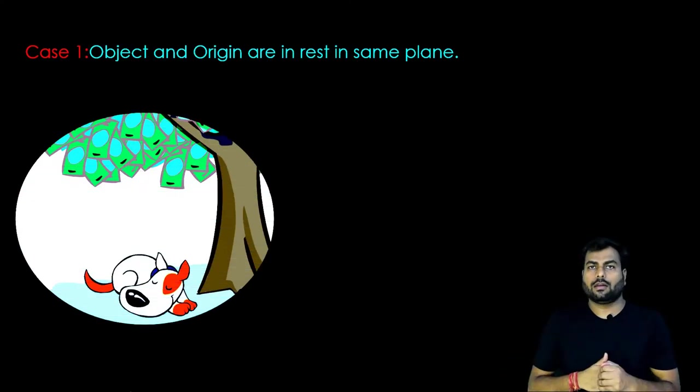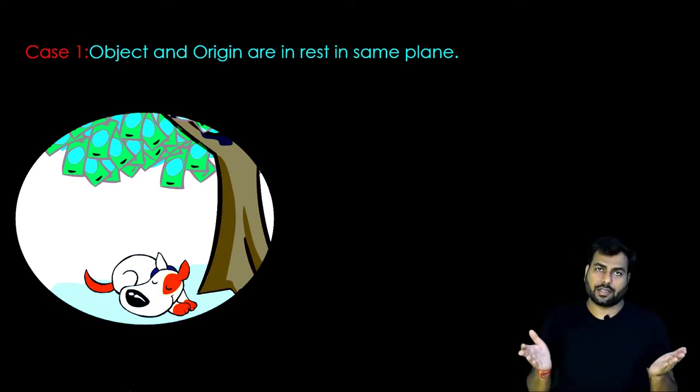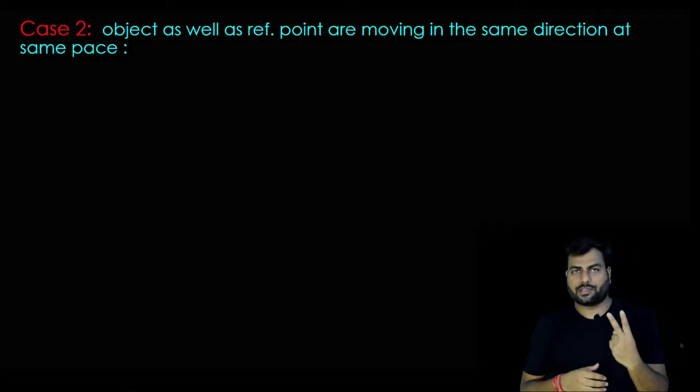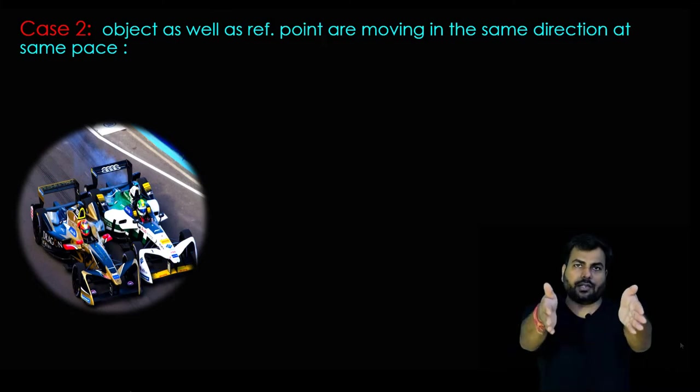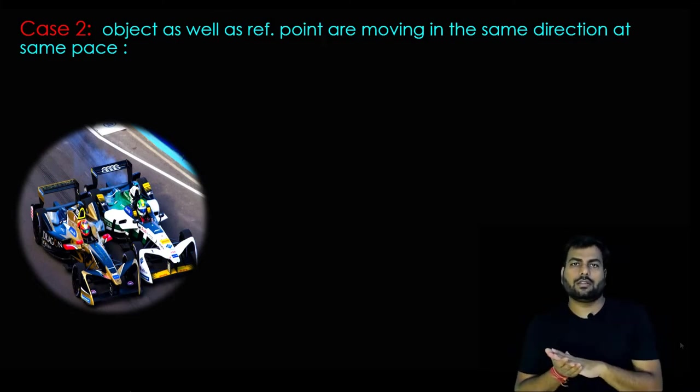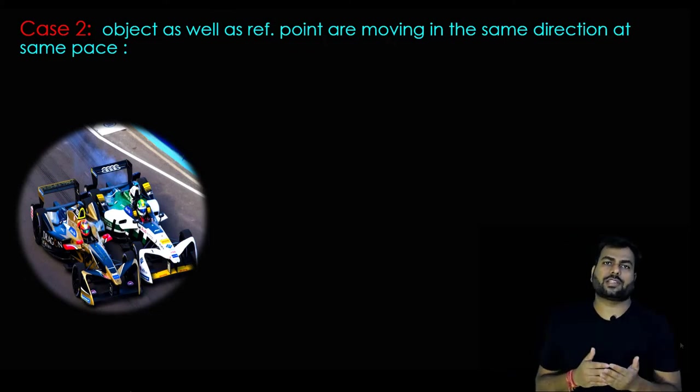Example of case 1: Dog sleeping on the tree, here the object and the reference point both are in rest. Example of case 2: Two cars moving in the same direction at same speed. If the passengers from each car look at other, they feel they are in rest, as position of none of them changes with respect to each other.